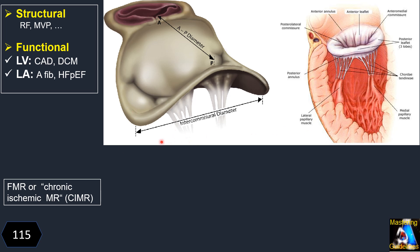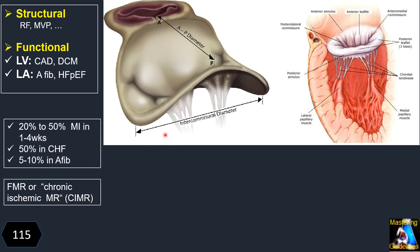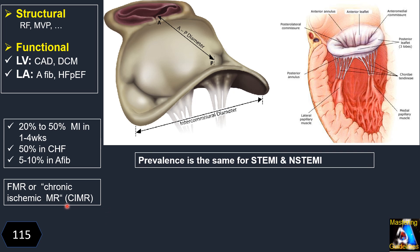In LA functional MR, two top disorders are involved: isolated AFib and diastolic dysfunction. About 20 to 50 percent of patients after MI within one to four weeks will have some degree of functional MR. Fifty percent of patients with CHF and diastolic dysfunction will have some degree of functional MR, and five to ten percent of patients with isolated AFib will have MR.